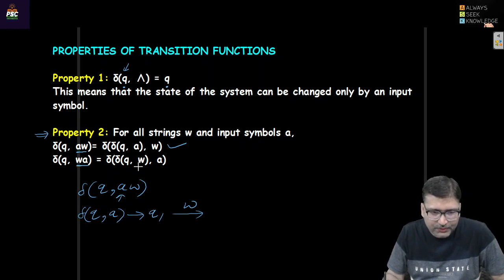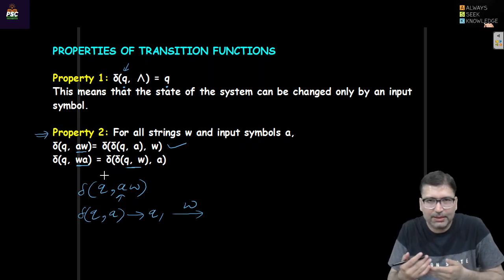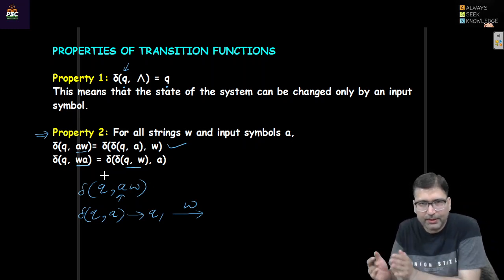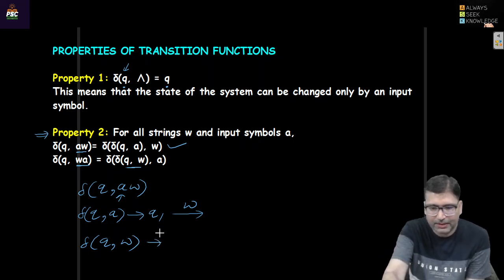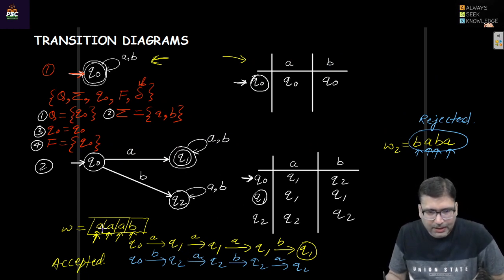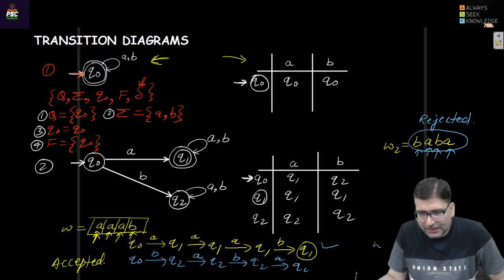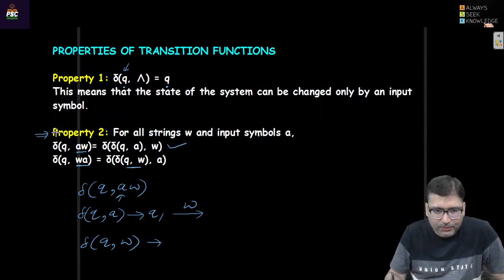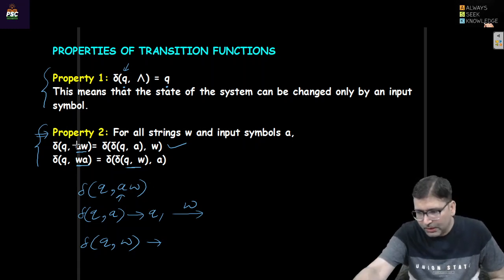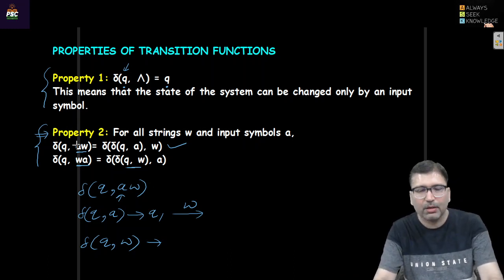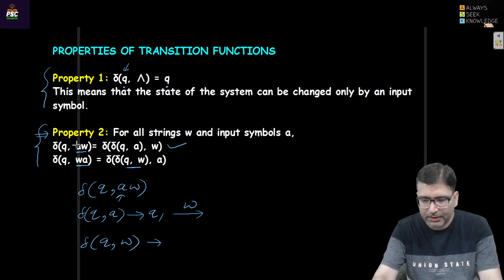Conversely, for input 'wa' (string w followed by symbol 'a'), we first traverse all edges for w to reach an intermediate state, then apply 'a' from that state. For example, after passing 'a a a b' from q0 you reach q1, and then passing one more 'a' continues from q1. These two properties define how the transition function behaves. That's sufficient for this session — see you in the next class.